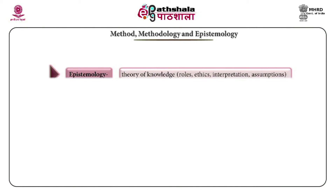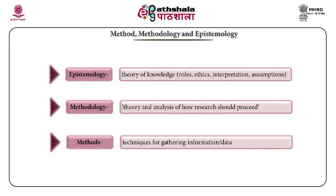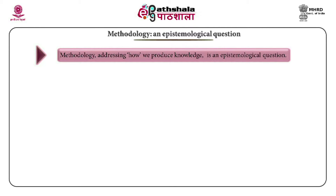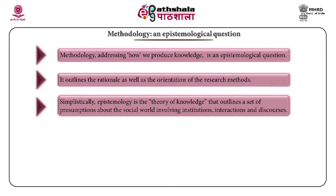Method, methodology and epistemology. Epistemology is the theory of knowledge — it deals with roles, ethics, interpretation and assumptions of knowledge. Methodology deals with the theory and analysis of how research should proceed. Method is the technique for gathering information or data. These three are interrelated. Methodology, addressing how we produce knowledge, is an epistemological question. It outlines the rationale and the orientation of research methods. Epistemology outlines a set of presumptions about the social world involving institutions, interactions and discourses.